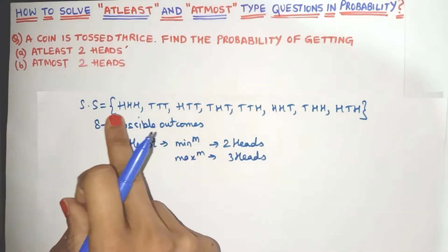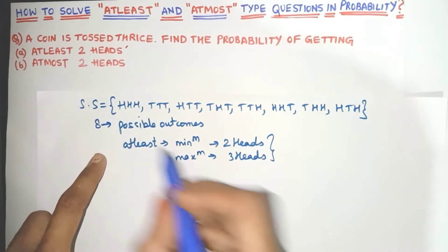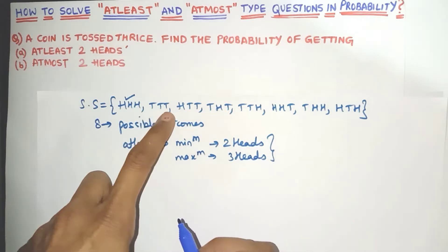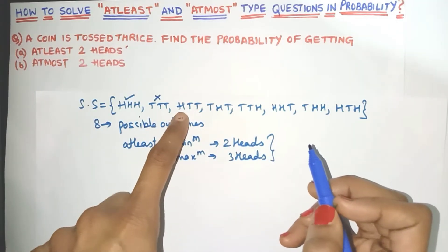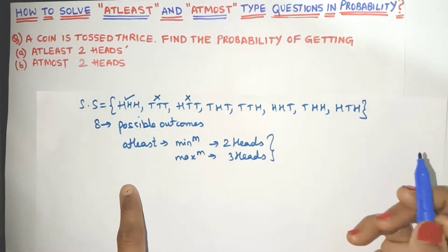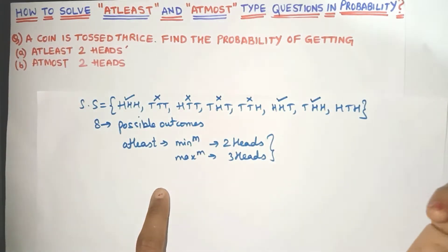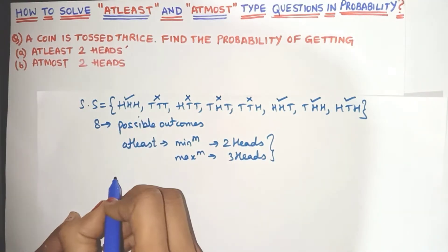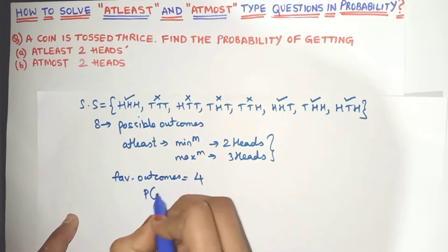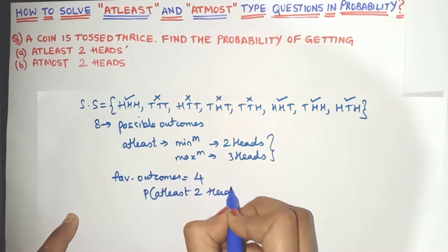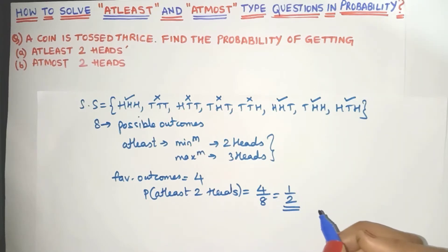So minimum two heads and maximum three heads. Let's see which outcomes satisfy this condition. Here we have three heads — maximum three heads is allowed, so yes, this qualifies. Here we have all three tails — minimum two heads are needed, so this will not be favorable. Here one head is coming, but we need minimum two heads, so this also will not satisfy. Here two heads — minimum two heads — so this will come, this will also come, and this will also come. So four outcomes are favorable out of eight total outcomes. The probability of getting at least two heads is 4/8, which simplifies to 1/2.